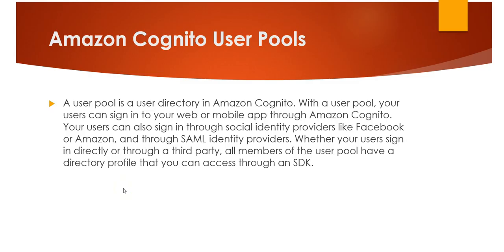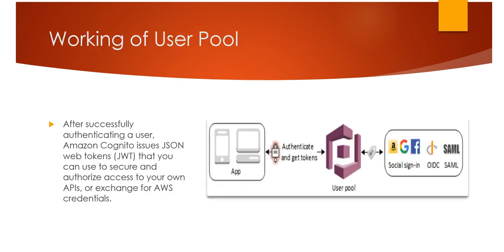What are Amazon Cognito user pools? A user pool is a user directory in Amazon Cognito. With a user pool, your users can sign into your web or mobile app through Amazon Cognito and through social identity providers like Facebook and Google. Whether your user signs in directly or through a third party, all members of the user pool have a directory profile that you can access through an SDK. After successfully authenticating a user, Amazon Cognito issues JSON Web Tokens (JWT) that you can use to secure and authorize access to your own APIs or exchange for AWS credentials.